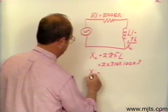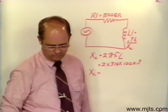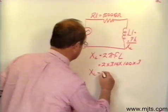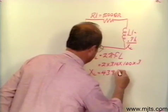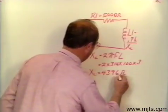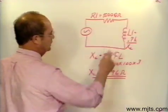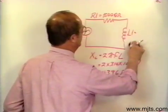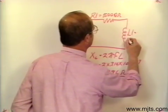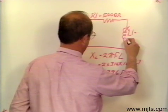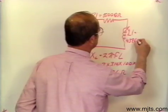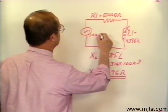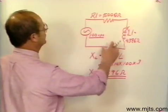I've worked this out, and what we should come up with is a value for inductive reactance of 4,396 ohms. So our opposition to current flow created by this 0.7 Henry inductor — X sub L — is going to be 4,396 ohms. That was with 100 cycles per second applied to that circuit.